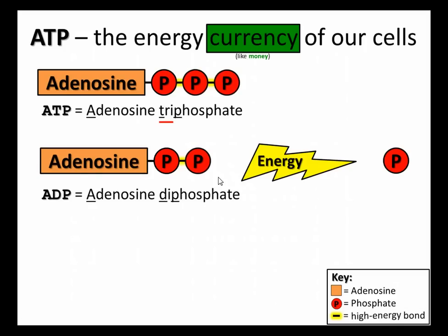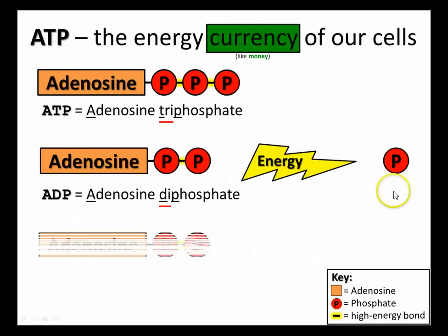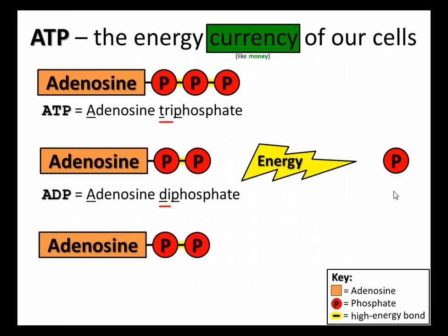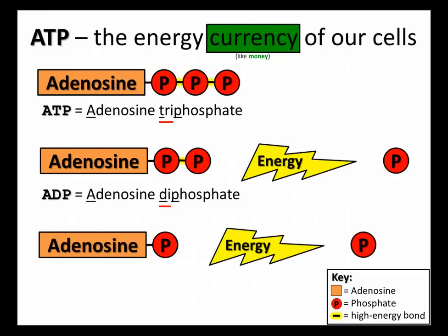So instead of ATP, this is now ADP, which stands for adenosine diphosphate. ATP became ADP plus an inorganic phosphate. Now, you can also take that ADP — and this doesn't always happen — but that can be further discharged. Break that high energy bond there, and pop — off comes that phosphate, energy is released, and instead of ADP, it is now AMP, adenosine monophosphate, mono meaning one.